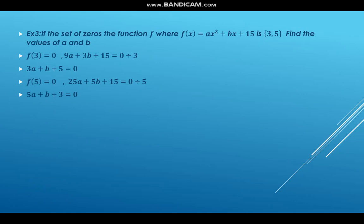We solve the two equations simultaneously. Multiply the second equation by -1: -5a - b - 3 = 0. Adding to the first equation: 3a + b + 5 = 0 gives -2a + 2 = 0, so a = 1. Substituting a = 1 into the first equation: 3(1) + b + 5 = 0, so b + 8 = 0, giving b = -8. Therefore a = 1 and b = -8.